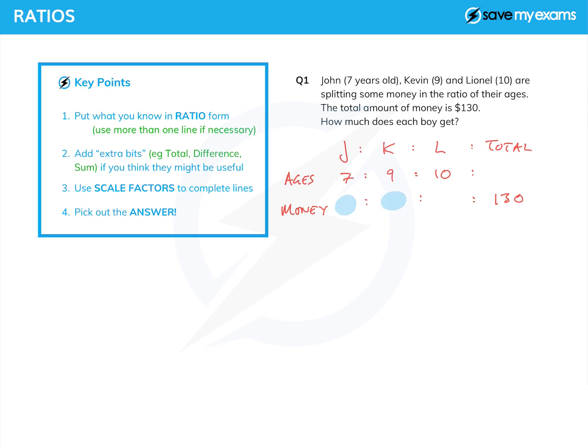Okay, and what is it we're trying to find? Well, actually we want to find each one of these three things here. What can we fill in straight away? Well, we can add up the ages to get the total age there, and 7 plus 9 plus 10 is 26.